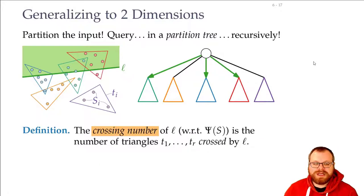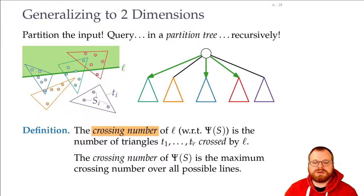Let's define this. The crossing number of the line l with regards to this simplicial partition is the number of triangles that are crossed by it. And the crossing number of our simplicial partition is the maximum crossing number over all possible lines. And this is what we want to keep low.